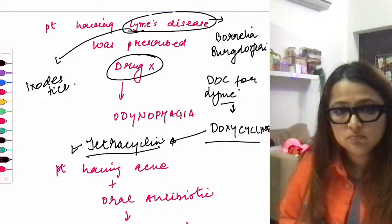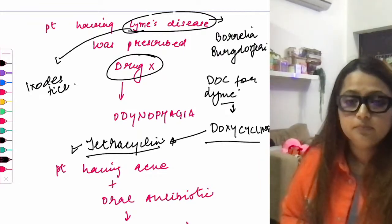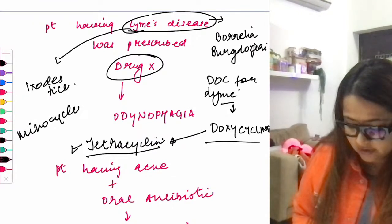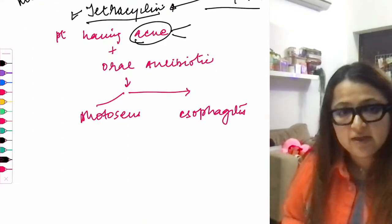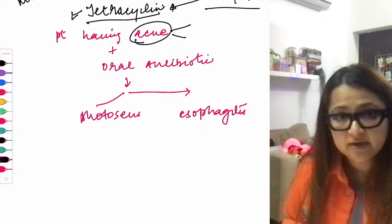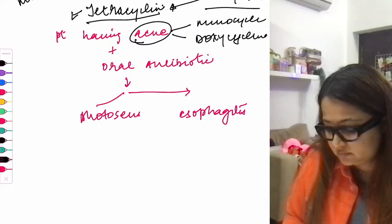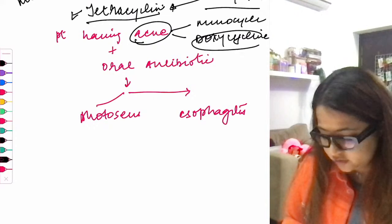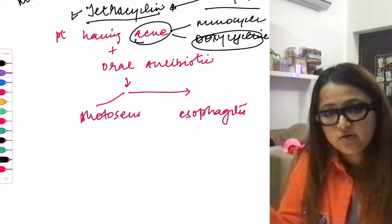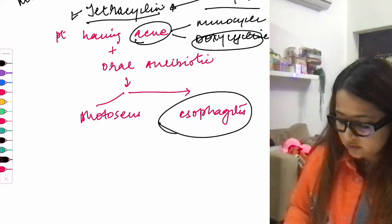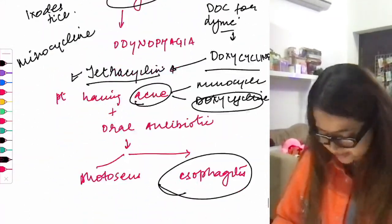Other tetracyclines include minocycline. In acne, if an oral antibiotic is prescribed, it could be minocycline or doxycycline. Doxycycline has side effects including photosensitivity and esophagitis. Iron (ferrous sulfate) tablets can also cause pill-induced esophagitis. Iron supplementation is given with vitamin C, because vitamin C increases the absorption of iron.